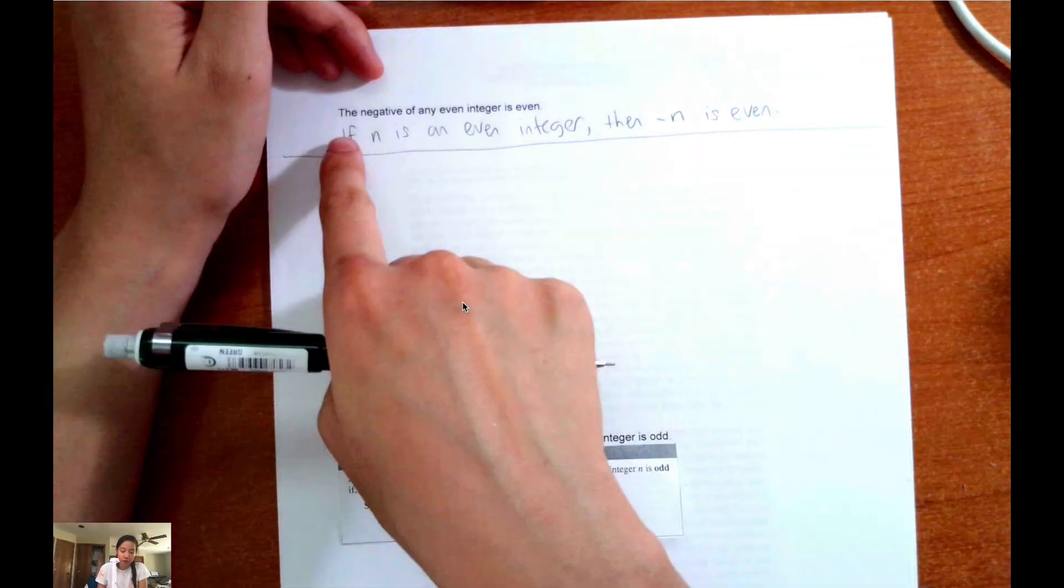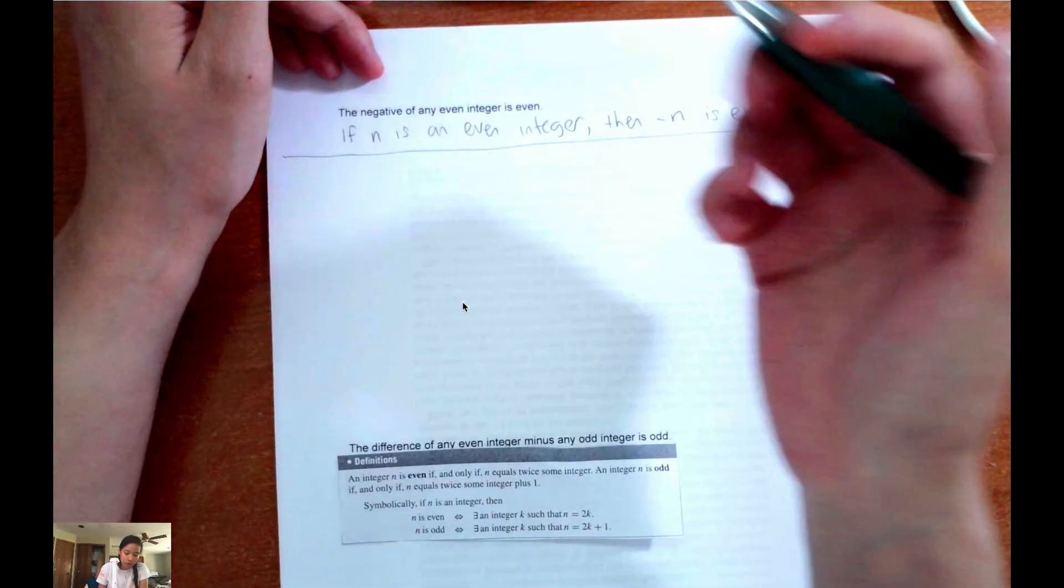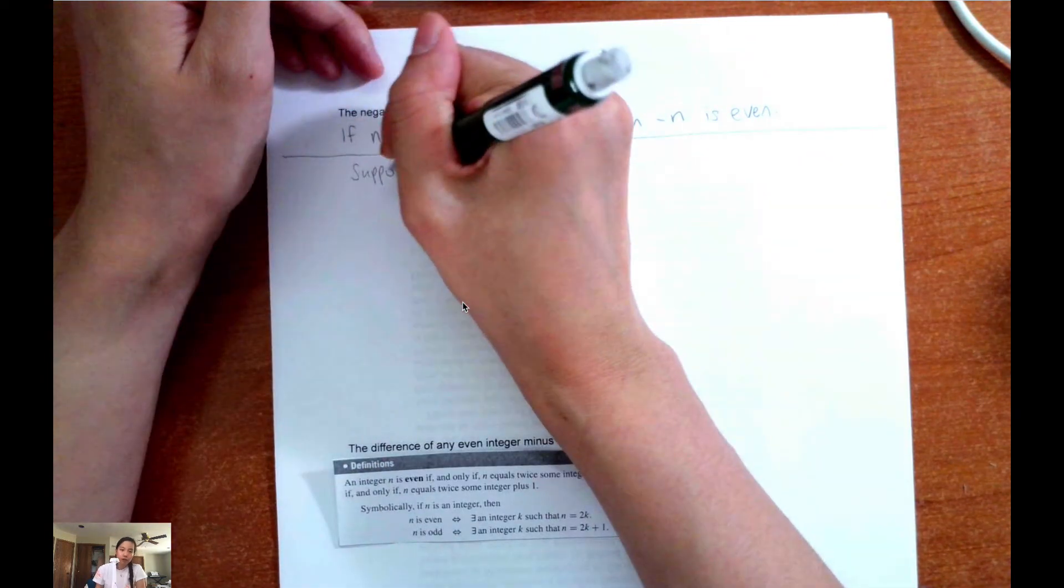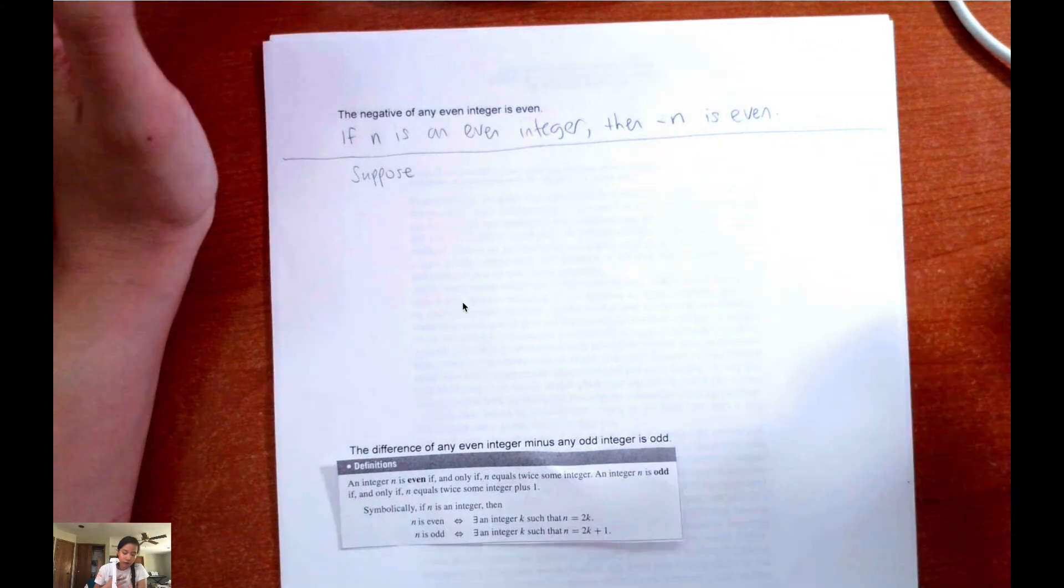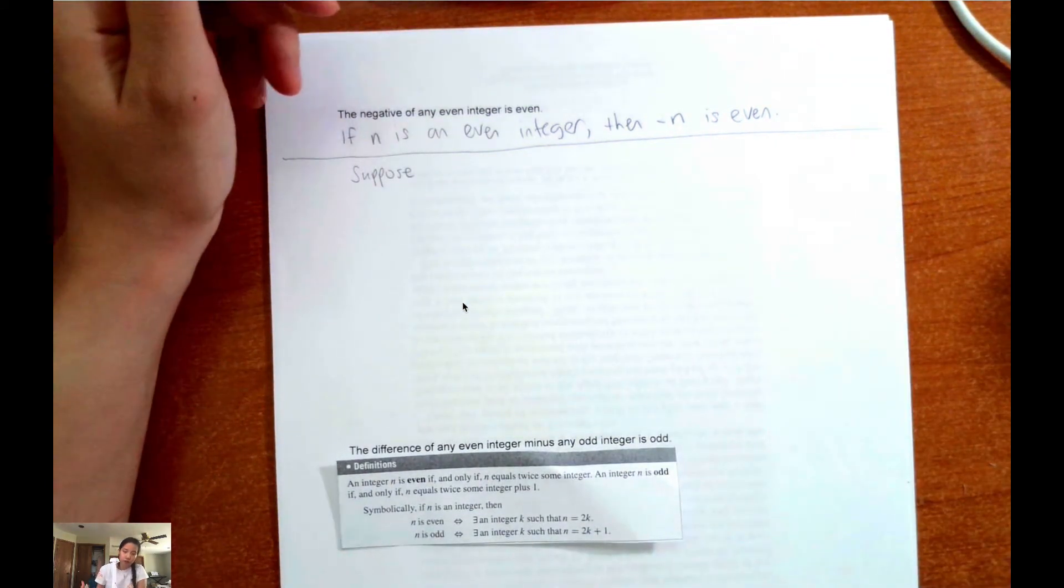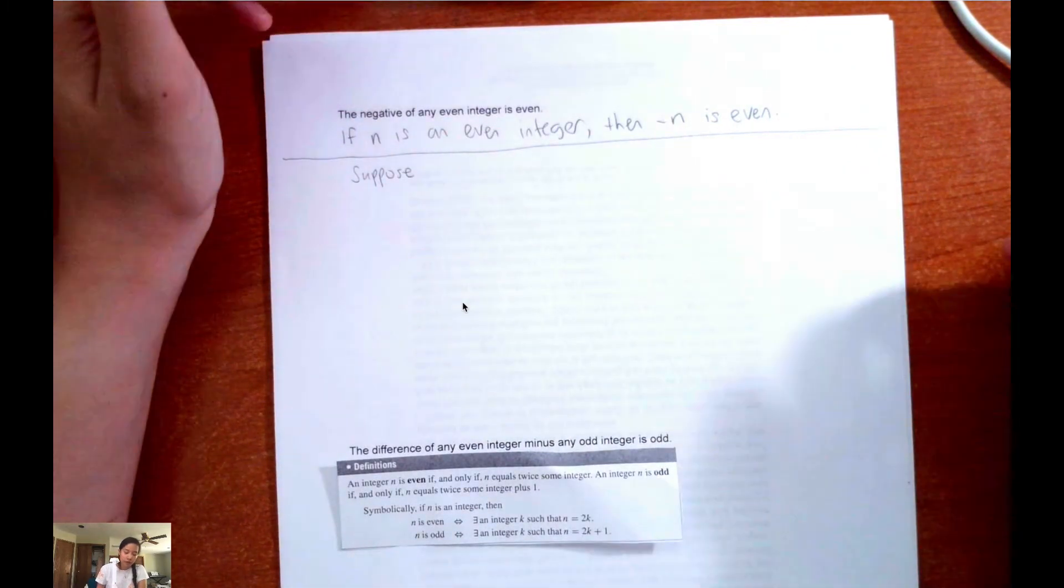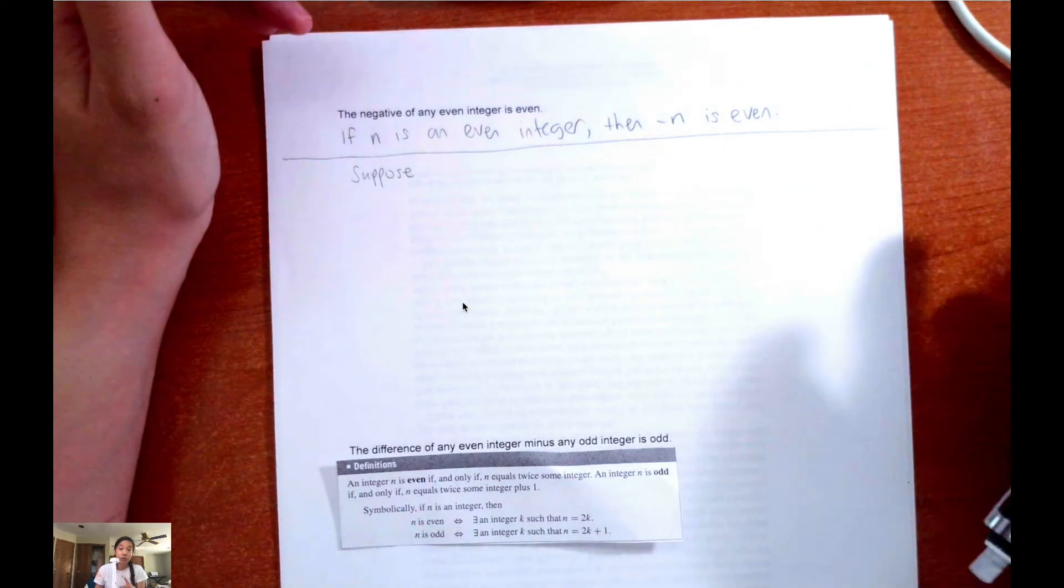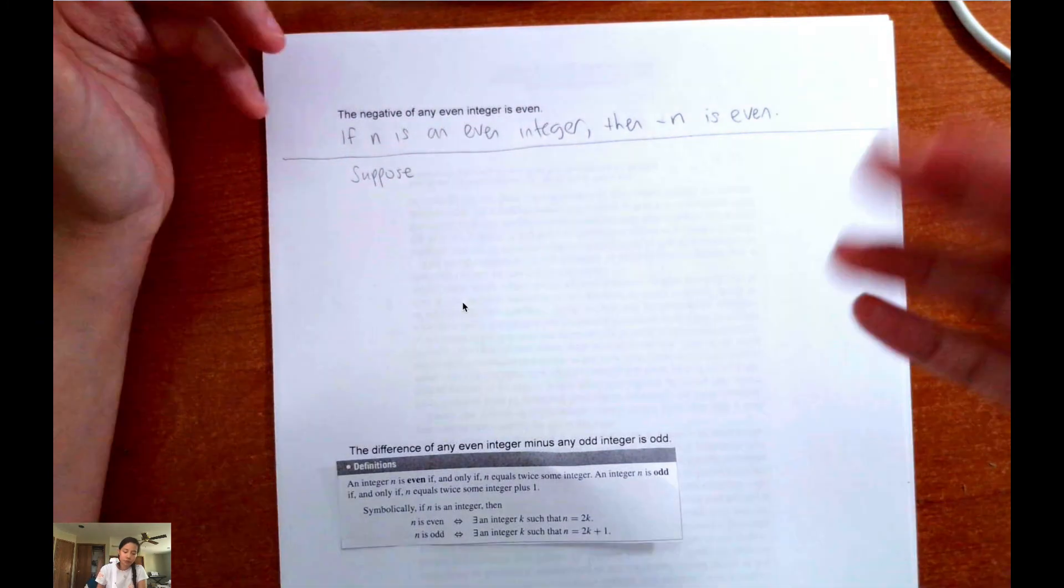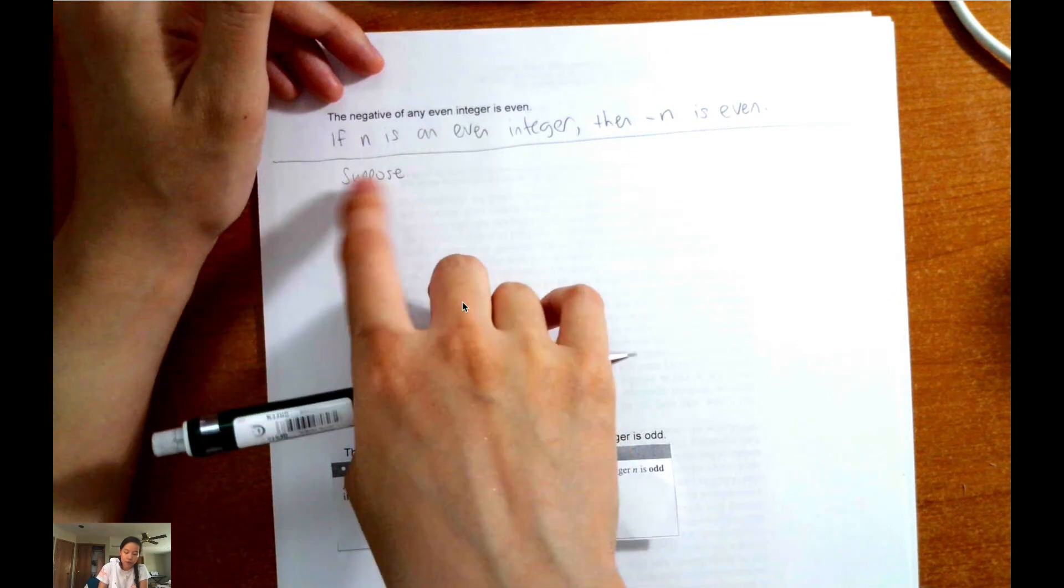Now we're actually going to start writing the proof. So the first thing you want to do is write the word suppose. Now keep in mind that writing proofs is an art. So I like writing the word suppose first, but the person who's grading your proof or proofreading your proof might prefer a different word. They might like to add certain words here and there in their proof. But the idea, the main skeleton of the proof is the same. So you would write suppose and then the first part of